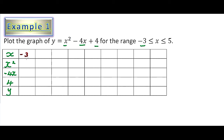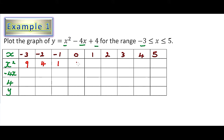We start with x values: -3, -2, -1, 0, 1, 2, 3, 4, and 5. In the x² row: (-3)² = 9, (-2)² = 4, (-1)² = 1, 0² = 0, 1² = 1, 2² = 4, 3² = 9, 4² = 16, and 5² = 25.